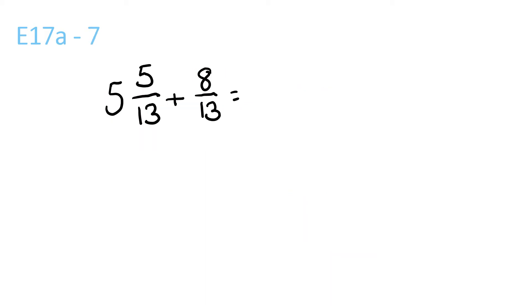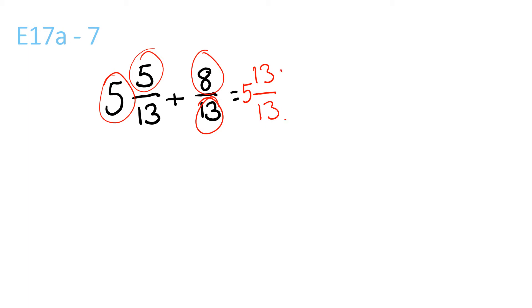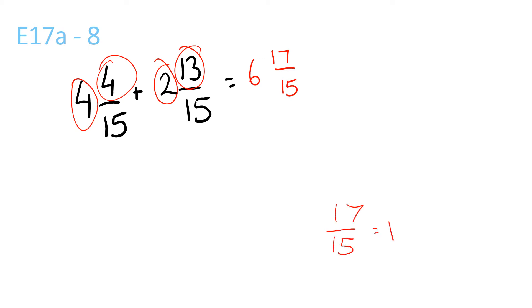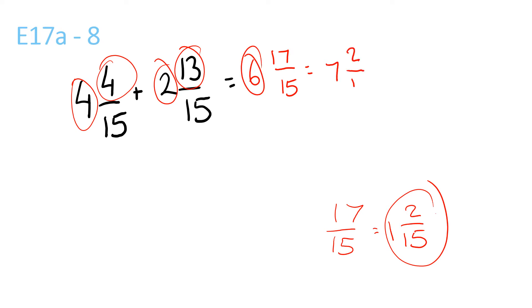Next question. 5 plus 8 is 13. 5 plus nothing is 5. So 5 and 13 over 13. The top and the bottom are the same, so it's equal to 1. So you get 5 plus 1, which is 6. 4 plus 2 is 6, and 13 plus 4 is 17 over 15. 17 over 15 is also equal to 1 and 2 over 15. So you have 1 and 2 over 15 plus 6, which is 7 and 2 over 15.